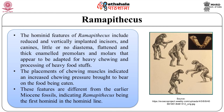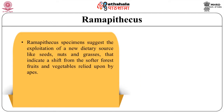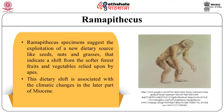These features, sufficiently different from earlier Miocene fossils, indicate Ramapithecus's direction toward the hominid line — perhaps the first hominid. Ramapithecus specimens very strongly suggest the exploitation of a new dietary source, most likely seeds, nuts, and grasses, indicating a shift from the softer forest fruits and vegetables relied upon by apes. This dietary shift is clearly associated with climate change in the later part of the Miocene, which led to an increase in open grasslands and a decrease in forest habitat.